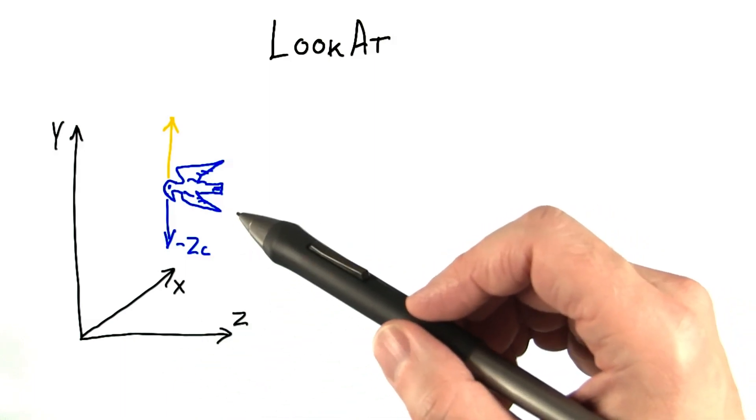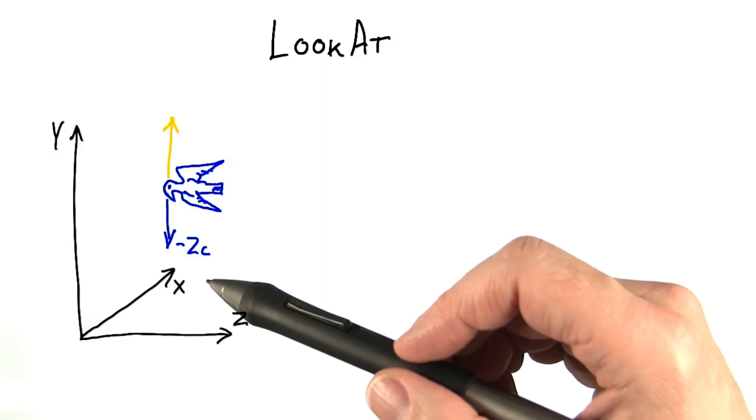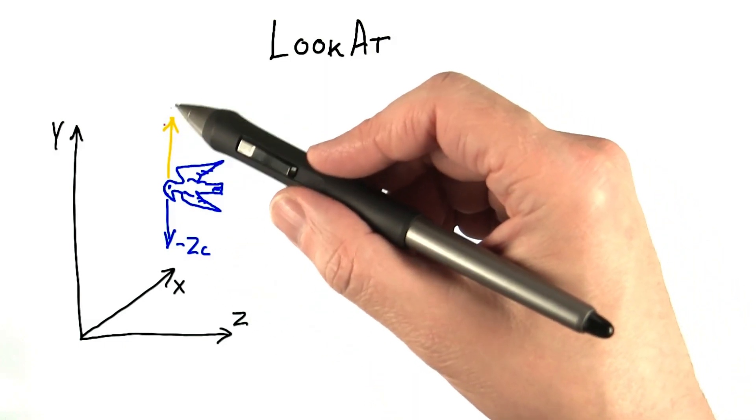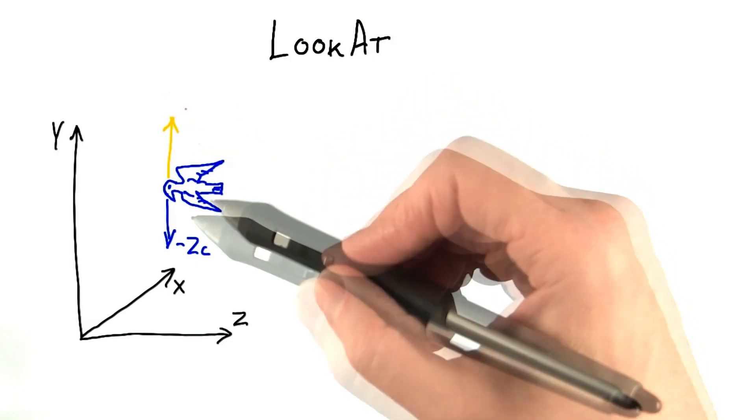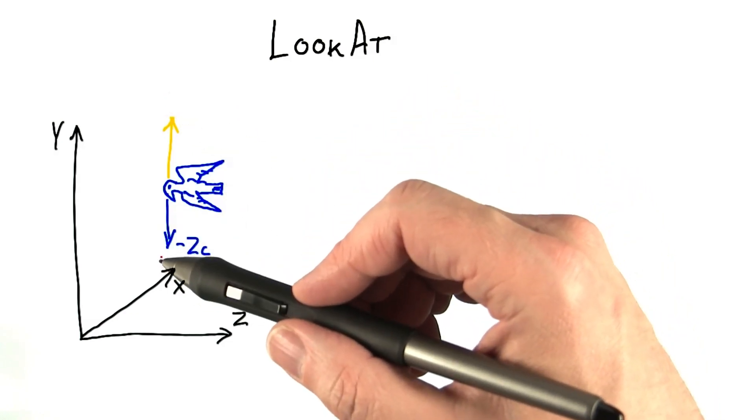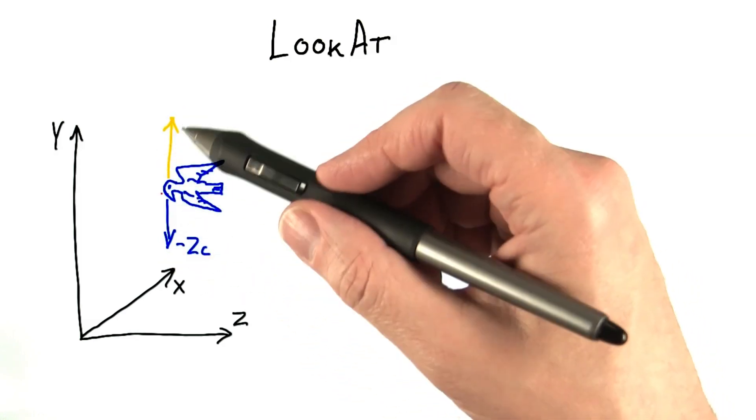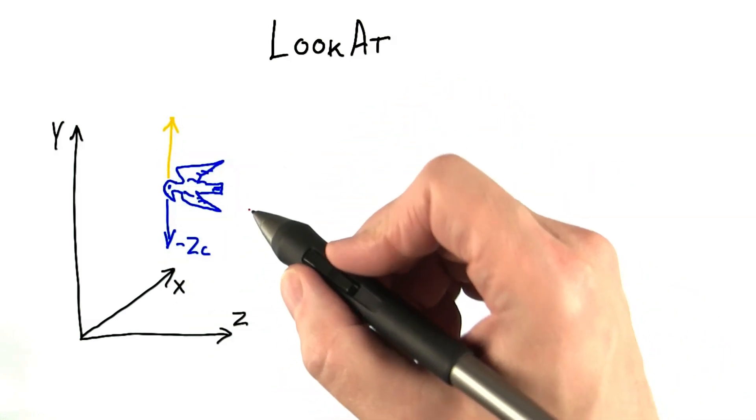Say we're a hawk soaring over some terrain. We're looking straight down, which would be looking down the y axis of our world. If we use the world's y axis as our hint, it doesn't make much sense. We define the negative z axis the camera's looking along and the y axis for the camera's up direction as vectors in exactly opposite directions. This is not very useful.